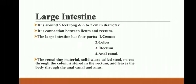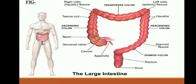Attached to the cecum is a twisted coil tube, the appendix or vermiform appendix. The remaining material, solid waste called stool, moves through the colon, is stored in the rectum, and leaves the body through the anal canal and anus. This is the figure of the large intestine.